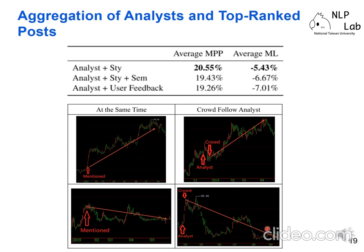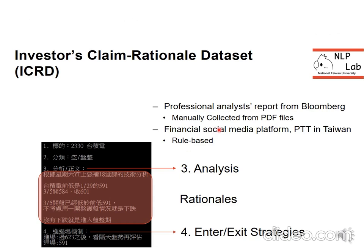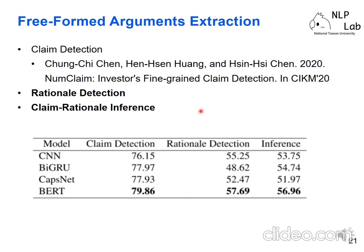We leave this research direction for future work as it may be an interesting issue to explore. Another limitation in our experiment is that we select the rationale manually and collect rationale from social media users via a rule-based method, which restricts the proposed method. To release this restriction, we propose another dataset for detecting the claim and rationale of investors. In our second paper we propose a claim detection dataset, and in this paper we propose a dataset called Rational Detection and the Claim-Rational Inference dataset, so models can automatically extract the rationale of investors. Here are the baseline performance results.